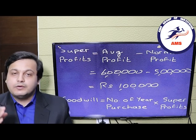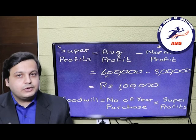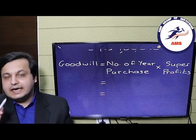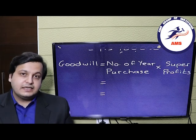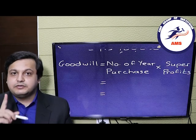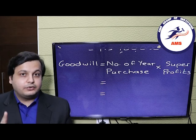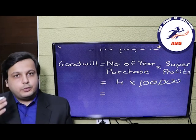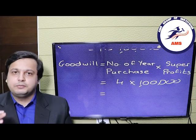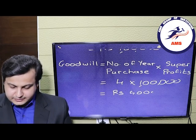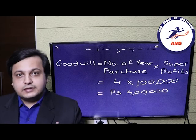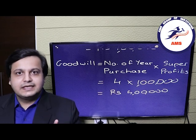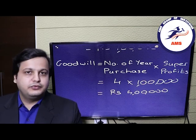The sum is not over yet — we still need to calculate the goodwill. The formula is: number of years purchase × super profits. In our example, the number of years purchase is 4 and the super profits are rupees 1 lakh. So the goodwill of the firm comes out to rupees 4 lakhs. This is how you calculate the goodwill of a partnership firm using the super profits method.